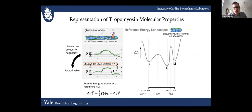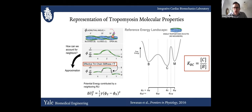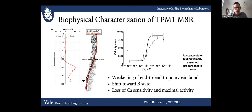The effective chain stiffness is one of two important parameters we're modulating. The second is the energy landscape of a single tropomyosin sliding across the surface of actin between its blocked, closed, and open regulatory positions — specifically the equilibrium constant between the blocked and closed states. Our collaborators had done work on M8R and found that it was weakening the end-to-end bond between tropomyosin molecules and shifting the blocked-closed equilibrium in molecular dynamic simulations. In a regulated in vitro motility assay, M8R caused a loss of calcium sensitivity, loss of cooperativity, and a drop in maximum velocity.